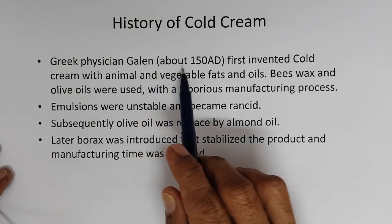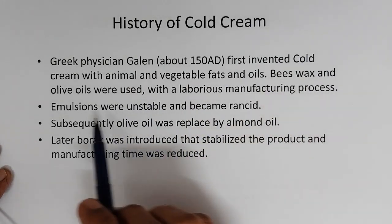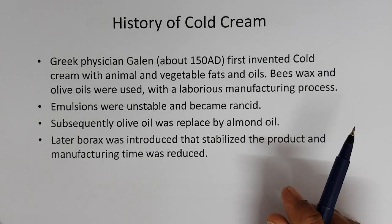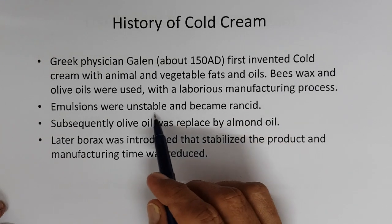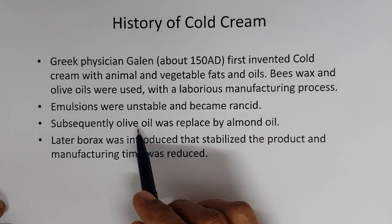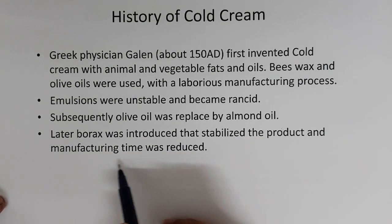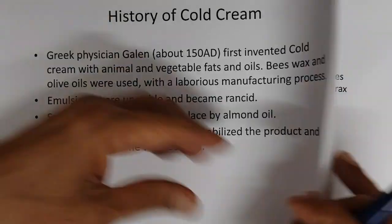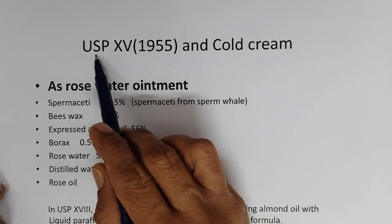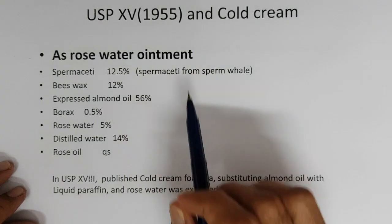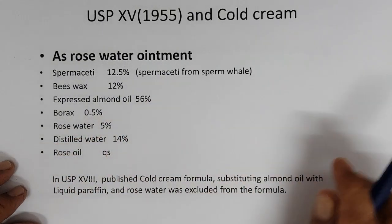History of cold cream: Galen in 150 AD first invented cold cream with animal and vegetable fats and oils. Beeswax and olive oil were originally used but no emulsifiers were used. The preparation was laborious and the product became rancid. Subsequently, olive oil was replaced by almond oil, and later borax was introduced, which stabilized the product and reduced manufacturing time. USP stands for United States Pharmacopeia.